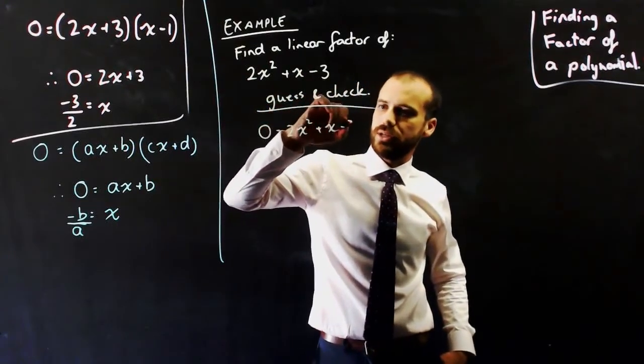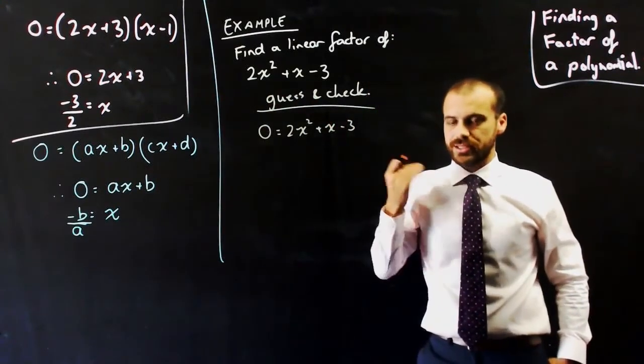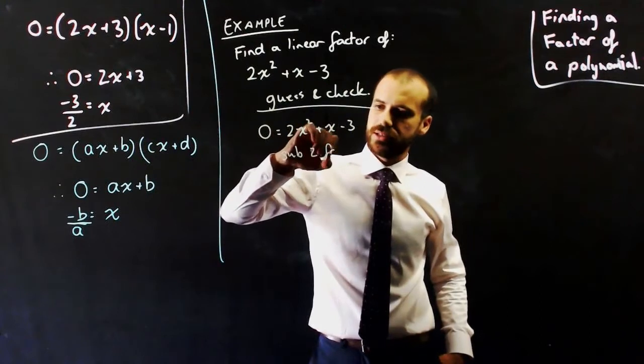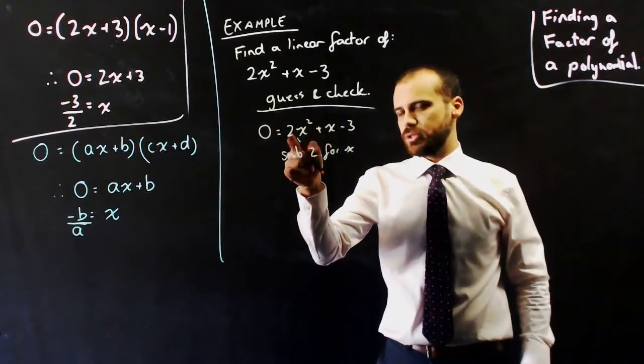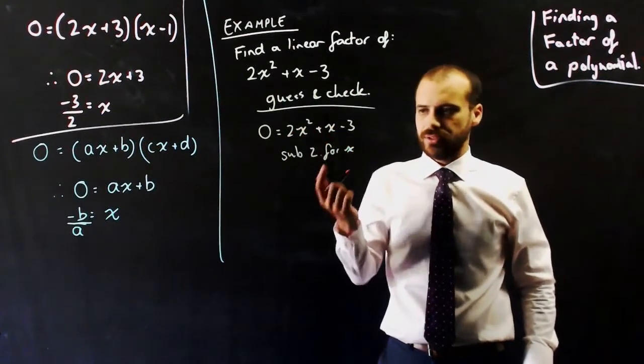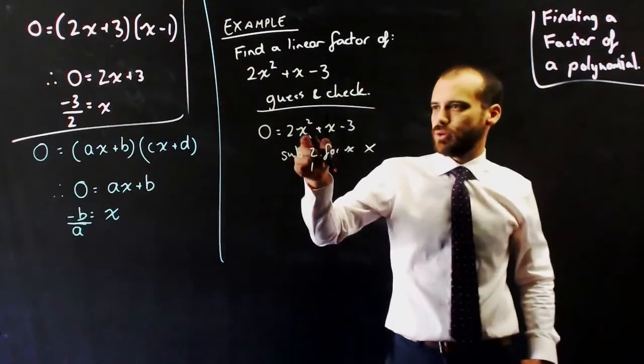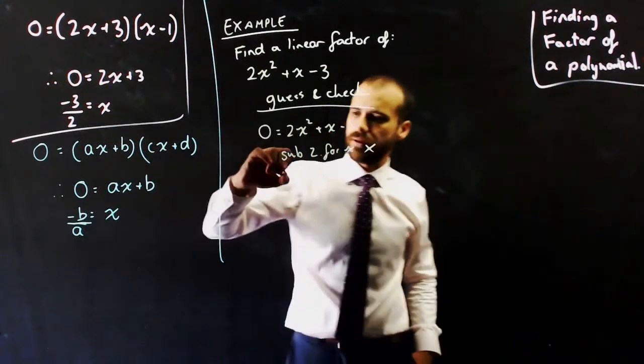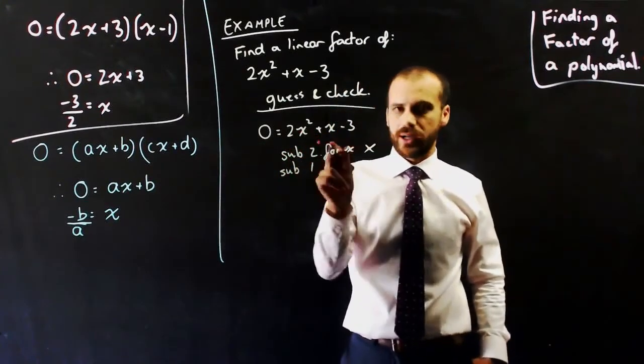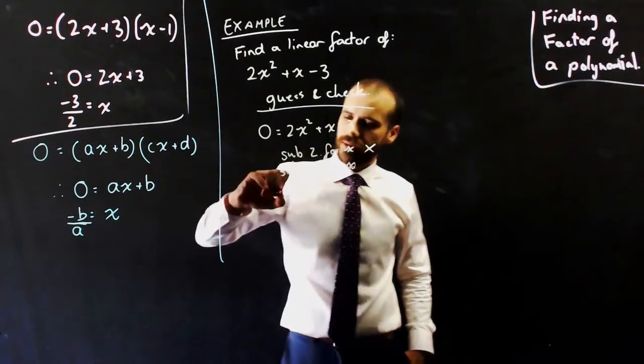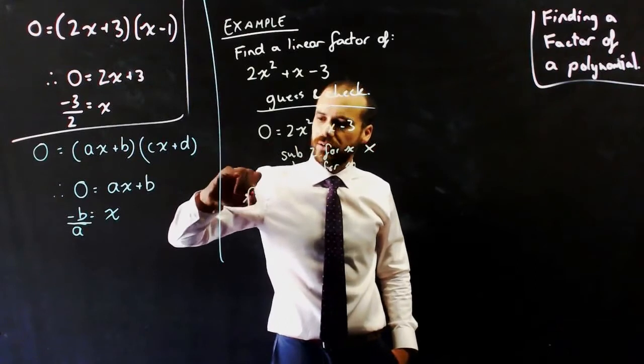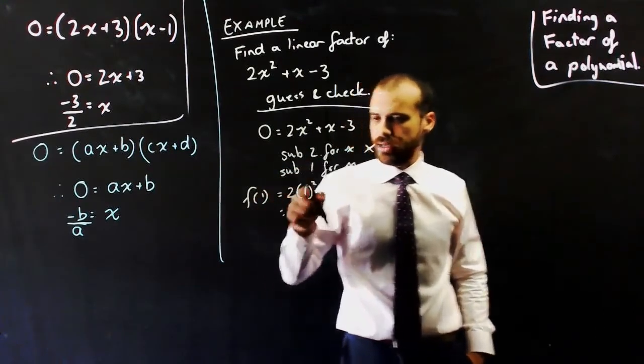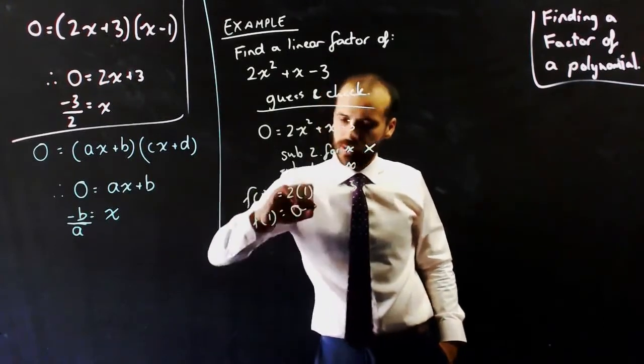2x squared plus x minus 3. And now I'm going to sub in x values until I find a linear factor. So, if I sub in 2 for x, I'll get 2 squared is 4 times 2 is 8 plus x is 10 minus 3 is 7. All right, that's not going to work. What about if I sub in 1? 1 squared is 1 times 2 is 2 plus 1 is 3 minus 3 is 0. Okay, so if I sub in the number 1 into that equation, let's just do it more formally. I'll get, if I say the function when x is equal to 1 is 2 times 1 squared plus 1 minus 3 is 0. Tick.